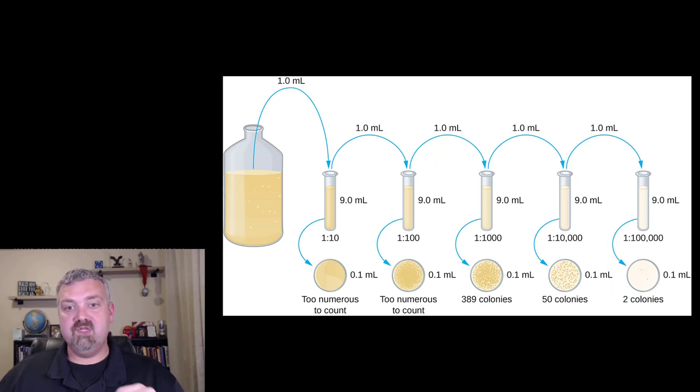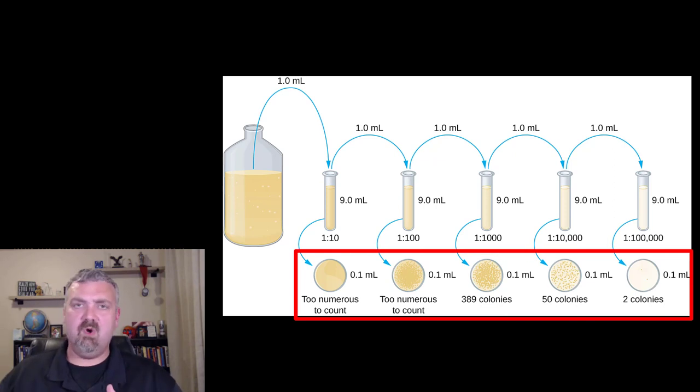And then once you've done that, this would actually be the pour plate method. So once you've done that, as this auger cools, you would pour it in these plates. And then you'd probably do more than one and you would take your plates and do averages. But you're going to be walking through and you're going to pour all these plates and then incubate them and come back and look at them.